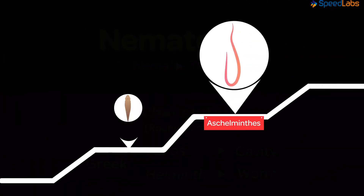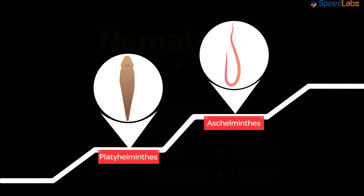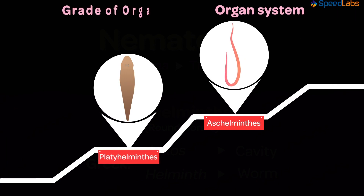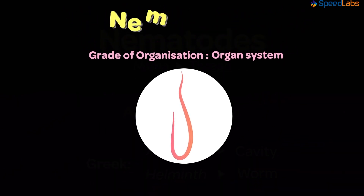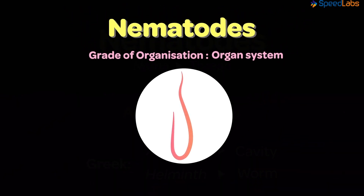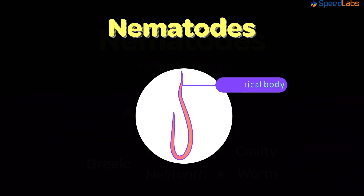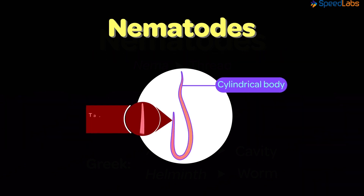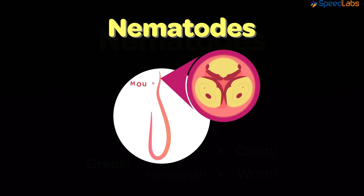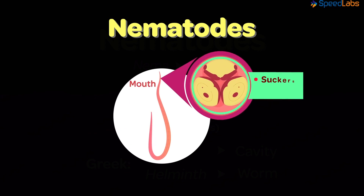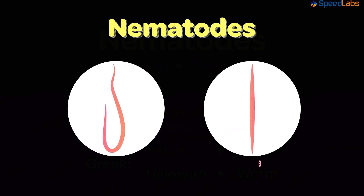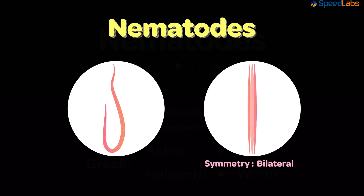These organisms are a step higher than the Platyhelminthes on the scale of evolution. They have an organ system grade of organization – that means a few organs make up the body and not just tissues. The body is usually cylindrical and has a tapering end. The mouth consists of prominent structures like suckers and hooks to attach to the host body and derive nutrition from it. The body is bilaterally symmetrical and can be divided into equal halves when cut through the central axis.